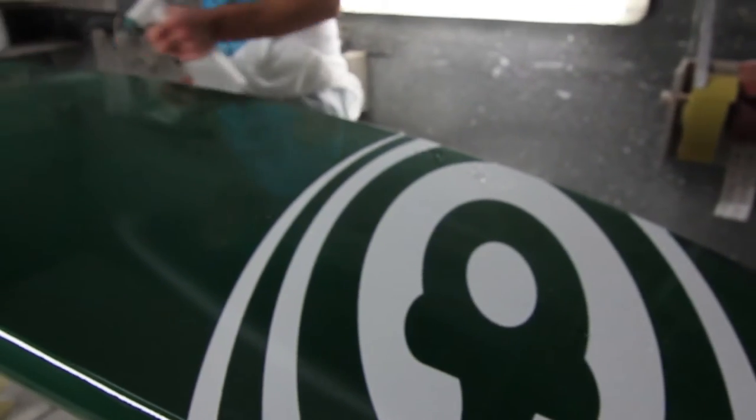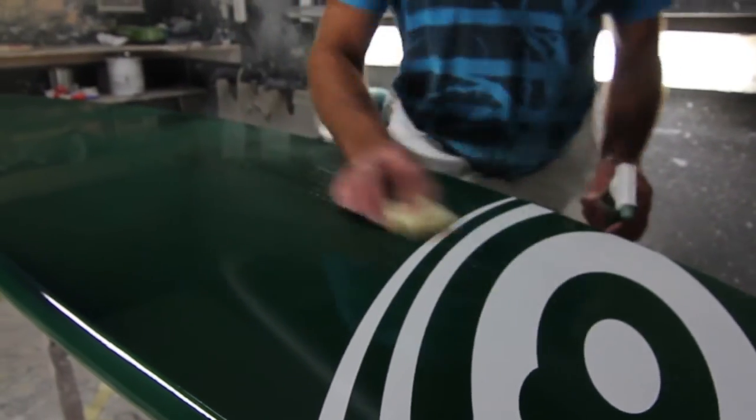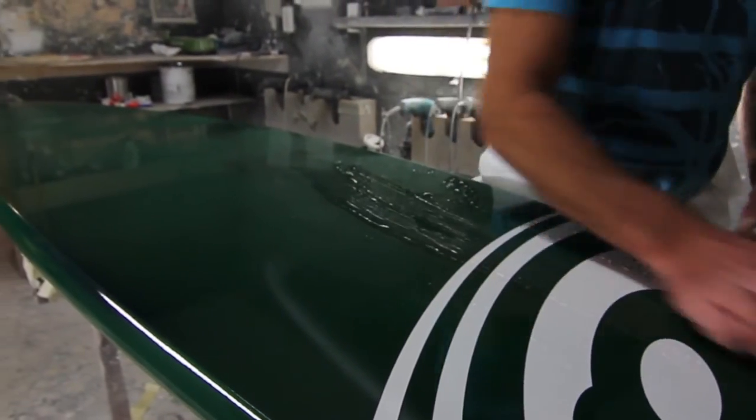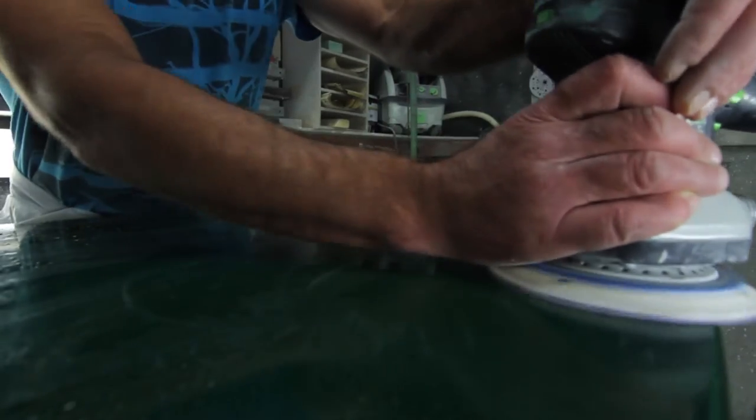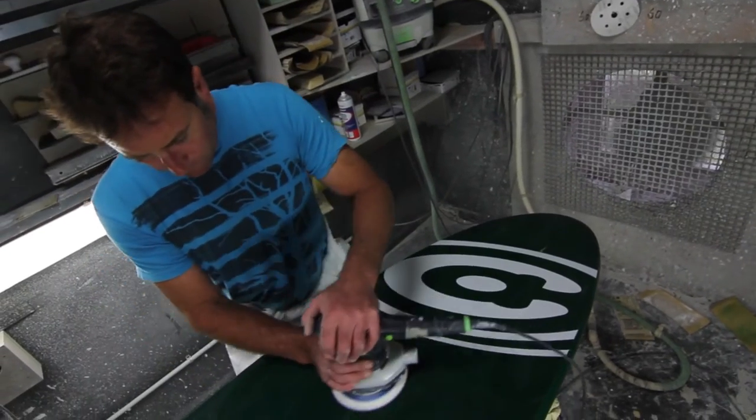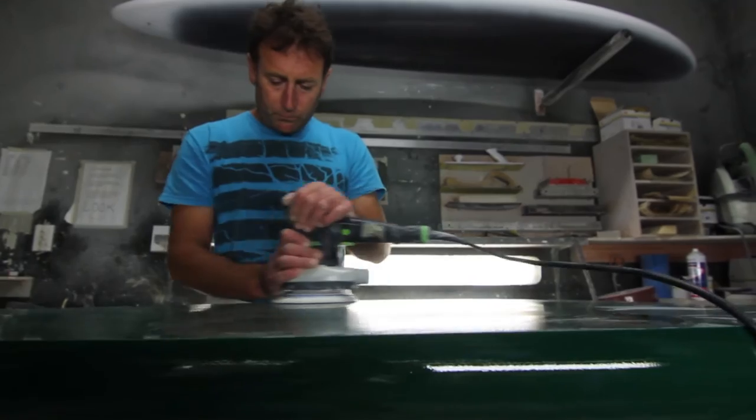To polish the board we start off with 1000 grit on a hard block just hand sanding, and then we move on to a 1500 grit with a machine and orbital, and then we move on to a 3000 grit once again on an orbital.